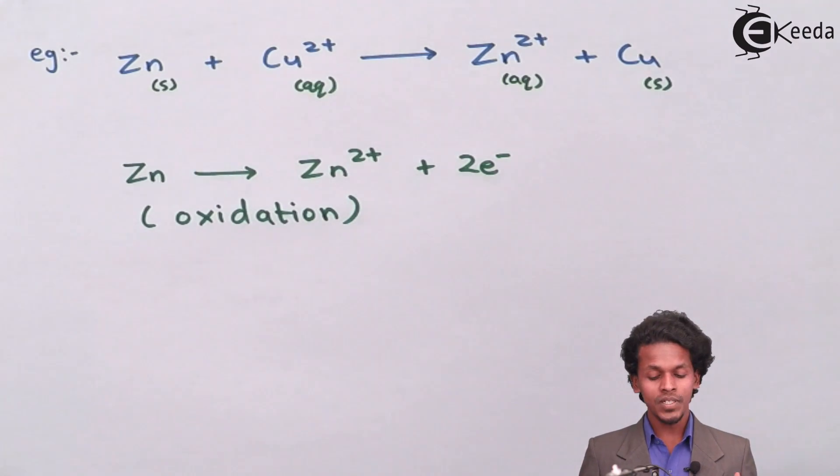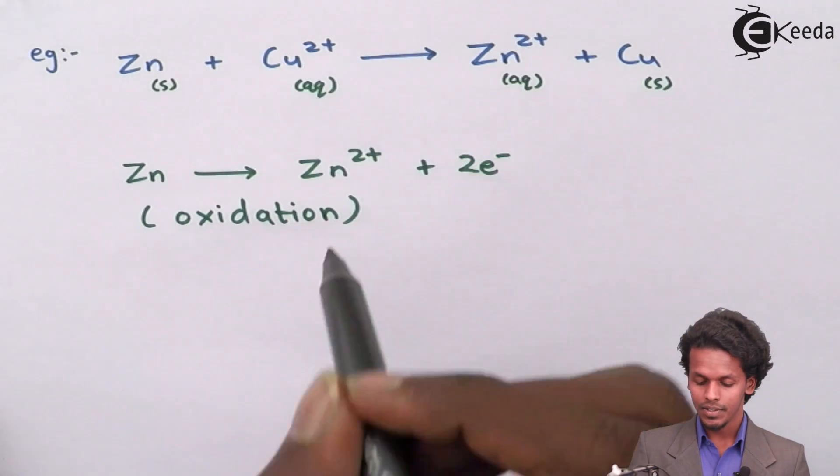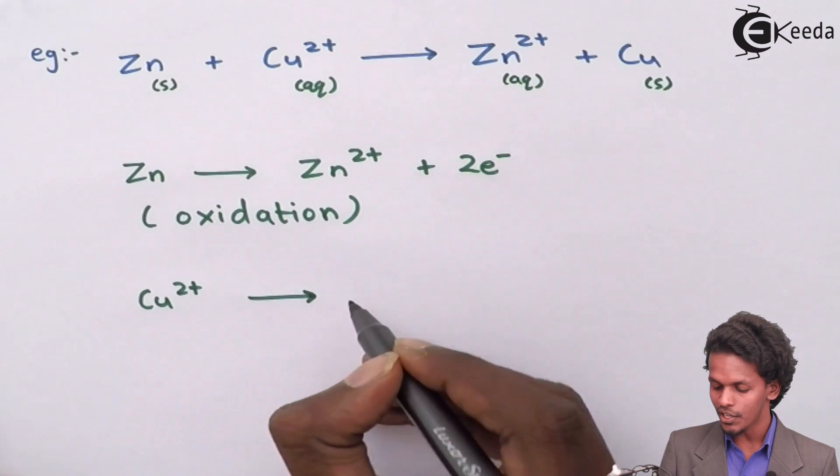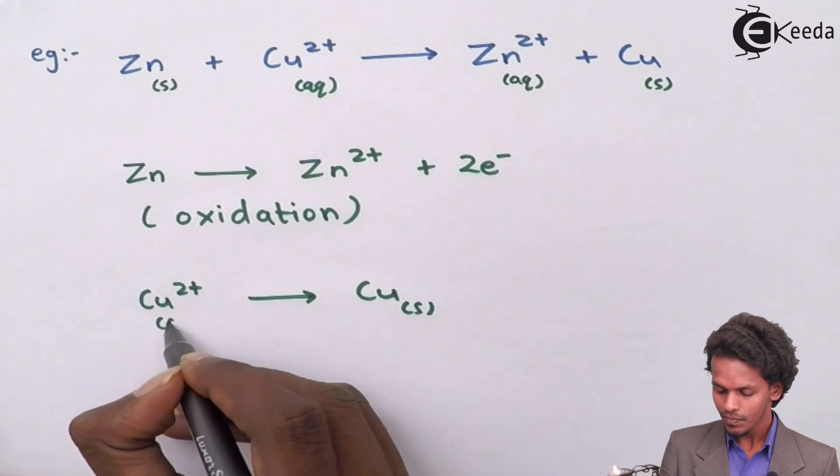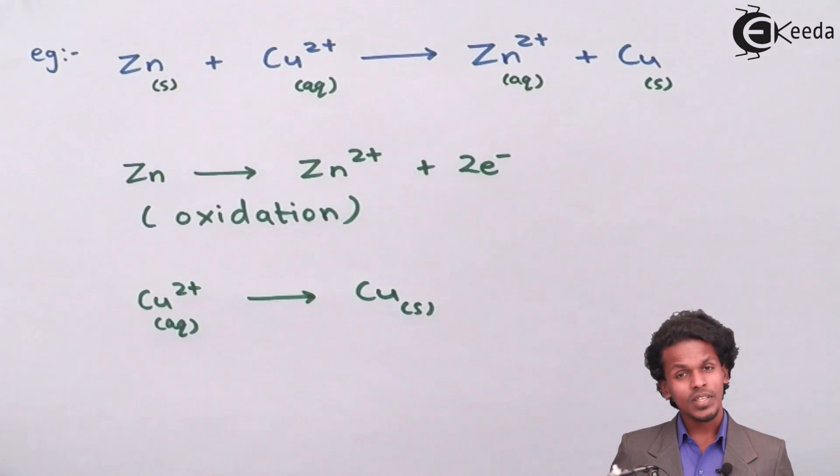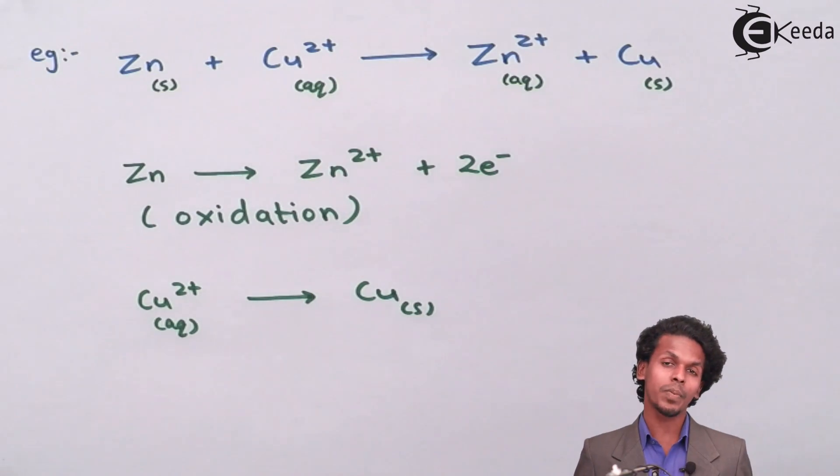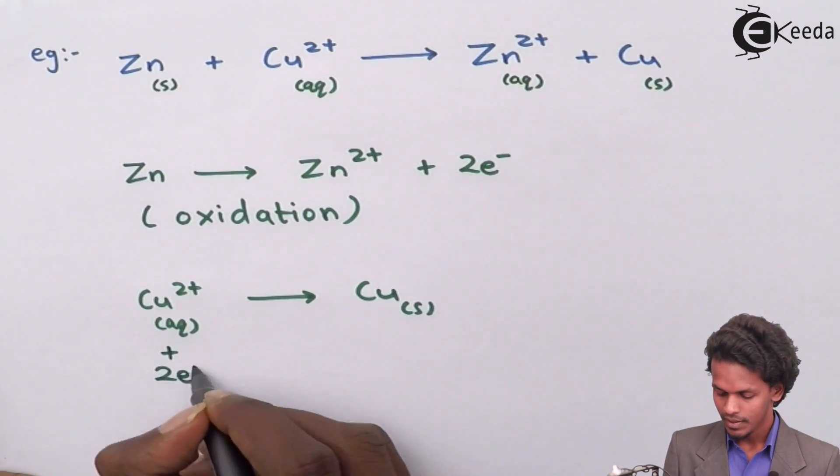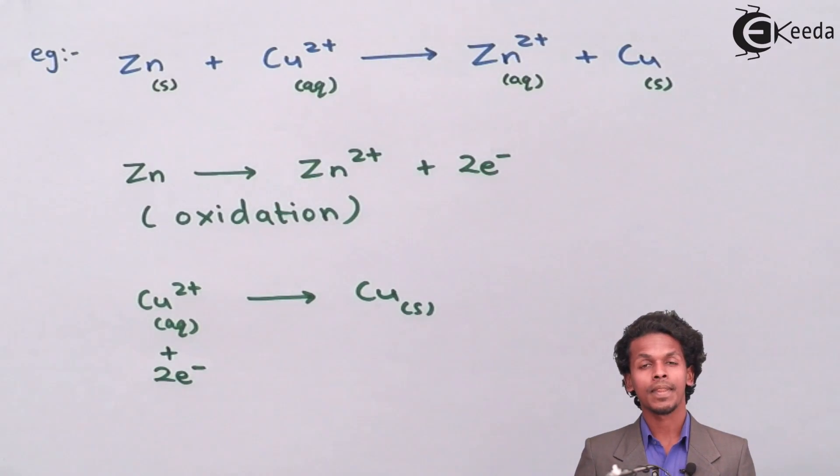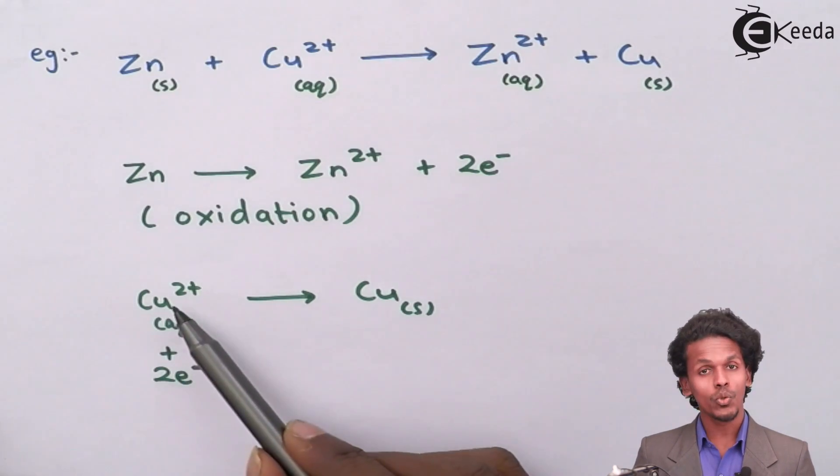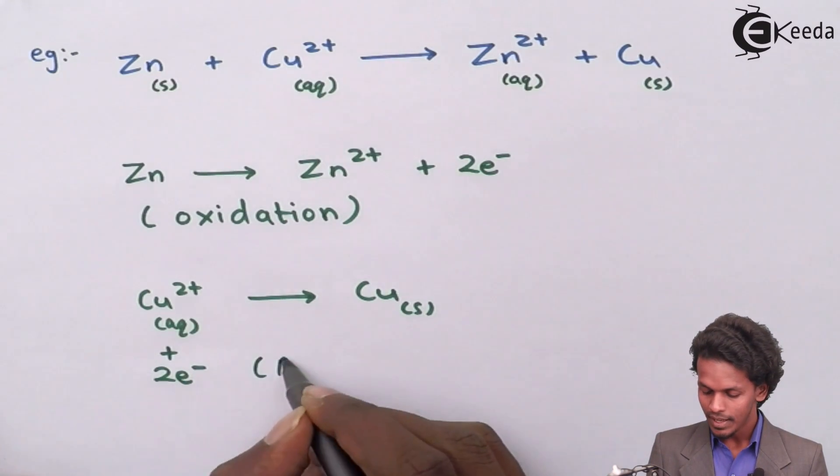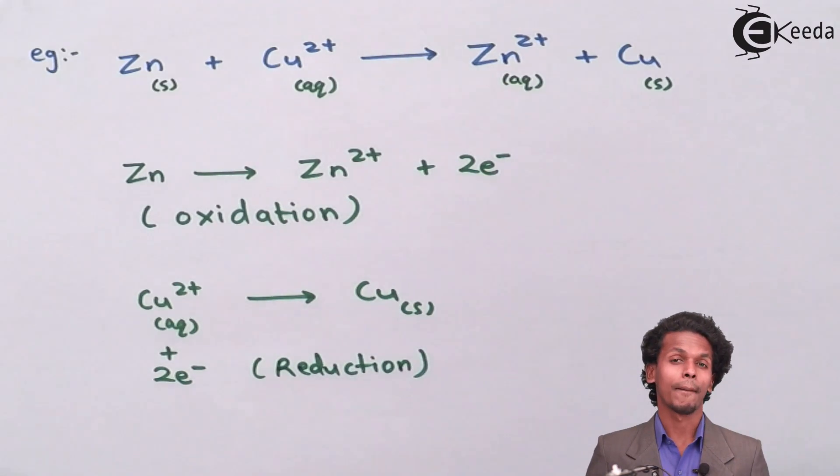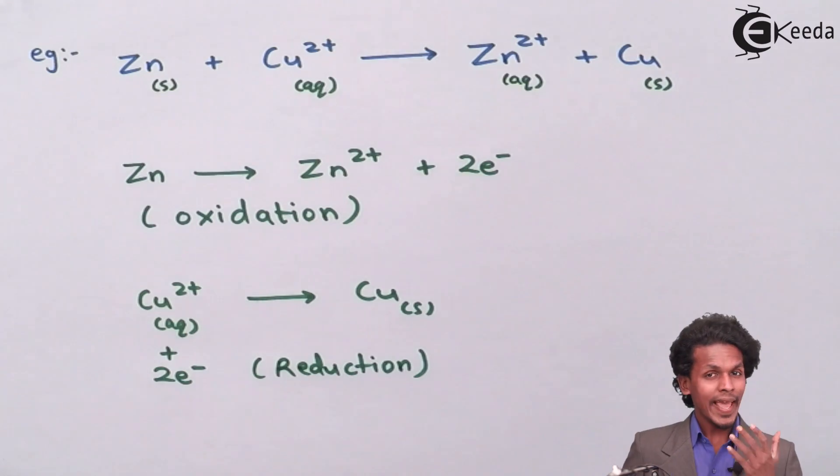While when we observe Cu 2 plus ion, Cu 2 plus ion is being converted into Cu solid. This is only possible if Cu 2 plus ion have accepted 2 electron. So the reaction that occurred by Cu 2 plus is nothing but reduction by accepting 2 electron.